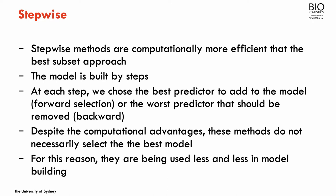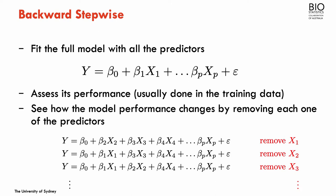In stepwise, the model is built by steps and at each step we have to decide what is the best predictor to add to the model — in the case of forward stepwise selection — or what is the worst predictor in the model that needs to be removed, which corresponds to backward stepwise selection. Despite the computational advantage of fitting much fewer models, stepwise methods don't have very good properties in terms of searching for the best or correct model, and for this reason they are being used less and less in applied research. In any case, we will describe these methods starting with backward stepwise selection.